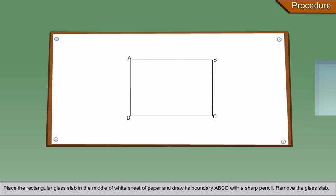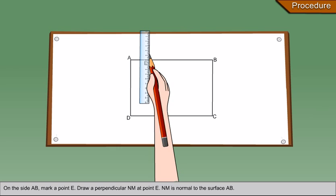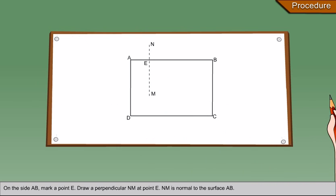Remove the glass slab. On the side of AB, mark a point E. Draw a perpendicular NM at point E. NM is normal to the surface AB.